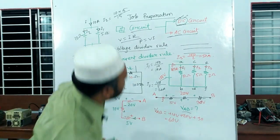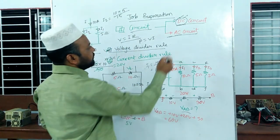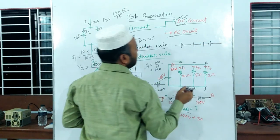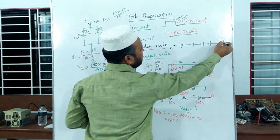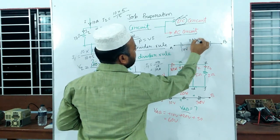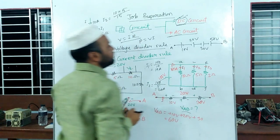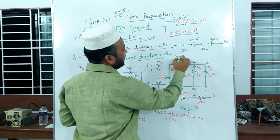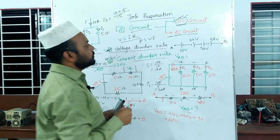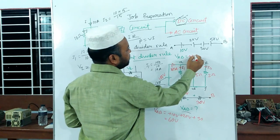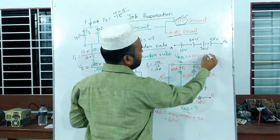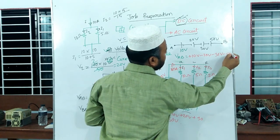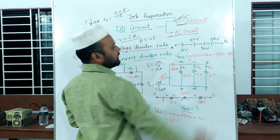I am going to add a series of batteries: plus, minus, plus, plus, minus, minus, plus. A is 10 volt, B is 20 volt, this is 3 volt, this is 5 volt. BAB is 10 volt. Going from A to B: minus, minus, minus — giving minus 90V.